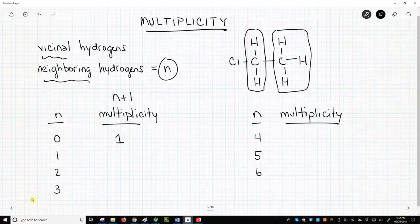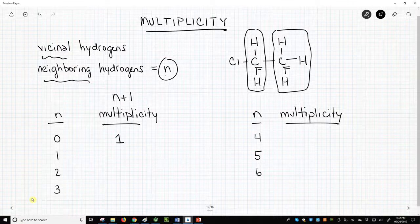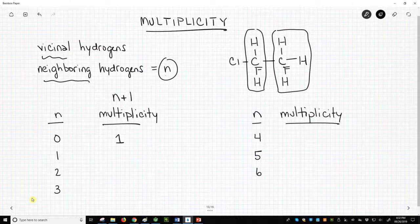The CH3 hydrogens are attached to a carbon. The next carbon over is an adjacent carbon. The adjacent carbon has two hydrogens. Therefore, the hydrogens on the CH3 group have two vicinal neighbors. We would say N equals 2.